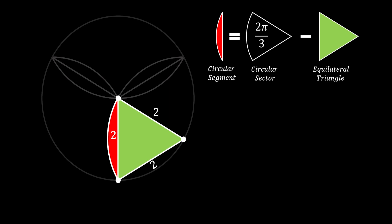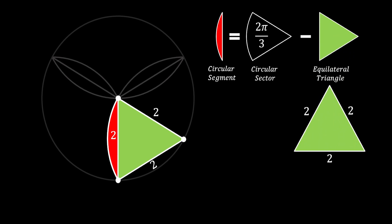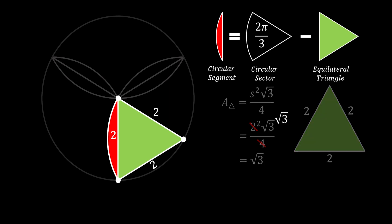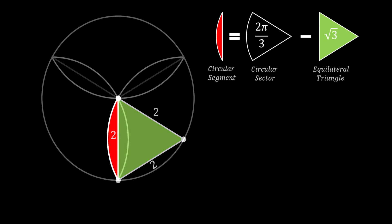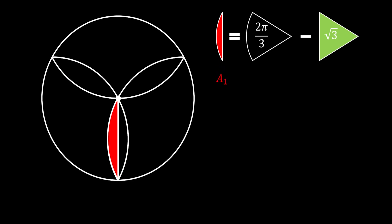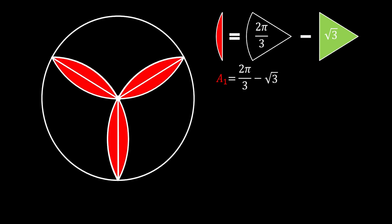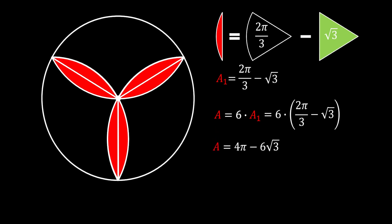Now let's find the area of our equilateral triangle with side 2. The area of an equilateral triangle equals the side squared times √3 over 4. Substituting our side of 2, we simplify 2² over 4 and get that the area of this triangle is equal to √3. So the area of our circular segment is equal to 2π/3 minus √3. This gives us the area of half of one petal of the flower. Since 6 of those areas make up the full flower, we multiply by 6 and simplify to get that the area of our red flower is equal to 4π minus 6√3 square units.